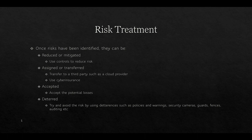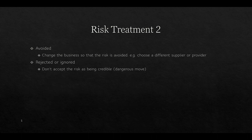Once risks have been identified, they can be reduced or mitigated using controls. They can be assigned or transferred to a third party such as a cloud provider, or through cyber insurance. They can be accepted. They can also be deterred by using deterrences such as policies and warnings, security cameras, guards, fences, or auditing. These will operate at different levels with different groups of people and will have different levels of effectiveness. Risk can also be avoided by changing the business so that the risk is no longer present — for example, by choosing a different supplier or provider.